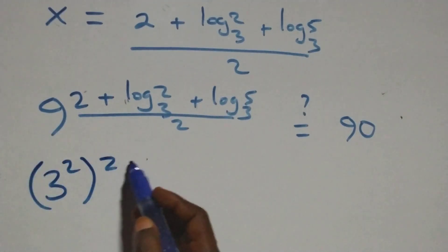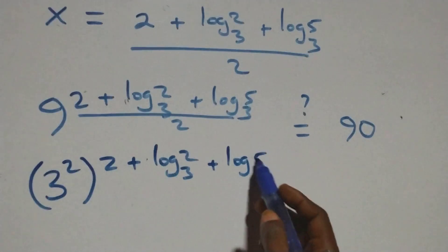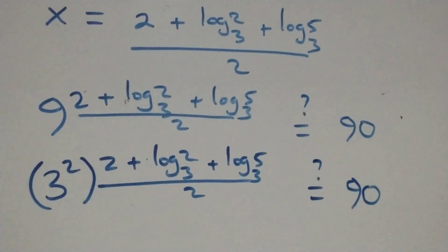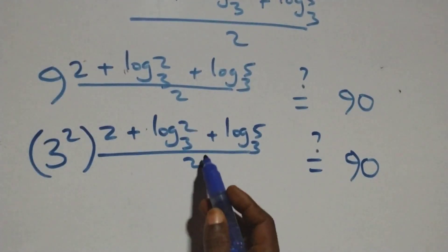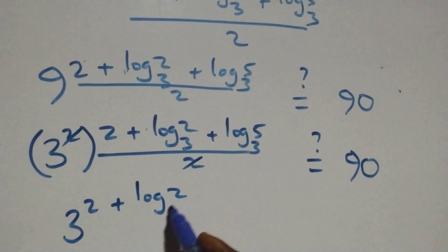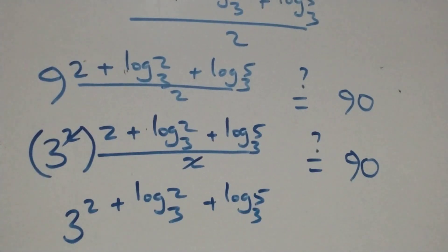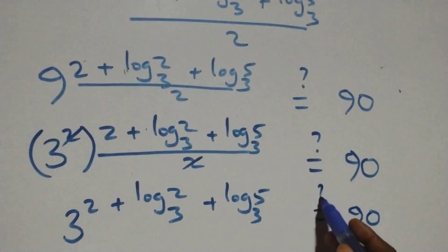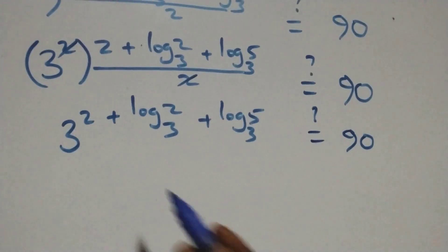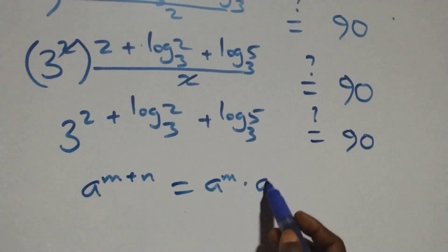So we have 3 squared raised to the power (2 plus log 2 base 3 plus log 5 base 3) all over 2, equals 90. The 2 in the power and the 2 in the denominator cancel each other, giving 3 raised to the power (2 plus log 2 base 3 plus log 5 base 3) equals 90. Applying the law of indices — a raised to (m plus n) equals a to the power m times a to the power n.